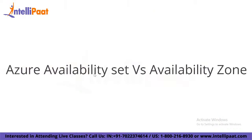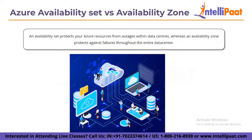Now let's look at Azure availability set versus availability zone. The fundamental distinctions are as follows. An availability set protects your Azure resources from outages within a data center, whereas availability zones protect against failure of an entire data center. Availability set protects applications from hardware failures within an Azure data center, whereas availability zones protect apps against total Azure data center failures. An availability zone is a distinct physical location inside an Azure region, with at least one data center per zone, each having its own power, networking, and cooling systems.